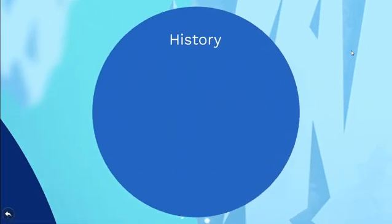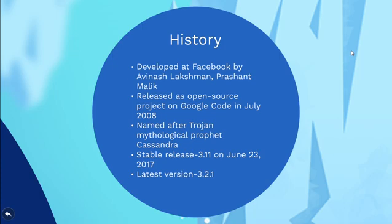Next, we'll have a look at how it all began. Cassandra was initially developed at Facebook to power the Facebook Inbox Search feature by Avinash Lakshman, one of the authors of Amazon's Dynamo and Prashant Malik. Facebook released it as an open-source project on Google Code in July 2008. It was named after the Trojan mythological prophet Cassandra.